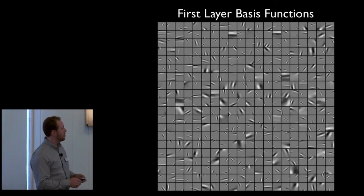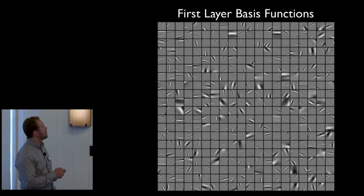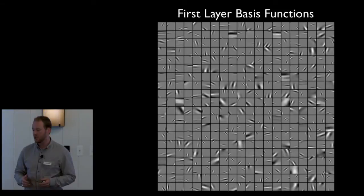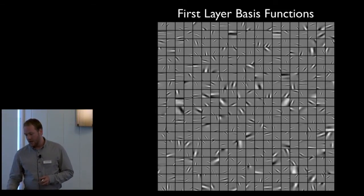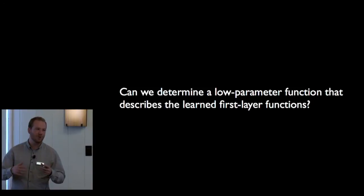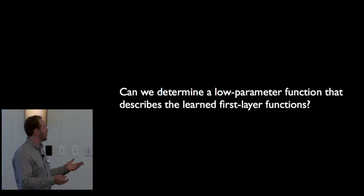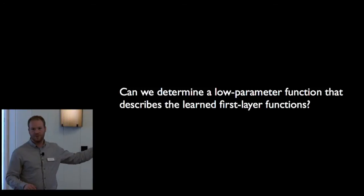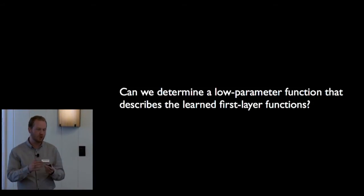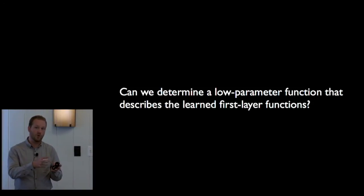Here's the whole population of these first layer functions — the model has about 20x20 image patches and 400 of these pairs — giving this tiling of orientation and spatial position. Suppose this result had come up 50 years ago when we didn't know anything about Gabor functions. We could ask: can we come up with a low parameter function that describes all of these complicated-looking things? Of course we can — that's the Gabor function. I wanted to walk you through this methodology of how we've gone from learning receptive fields in the pixel domain to fitting just Gabor functions.